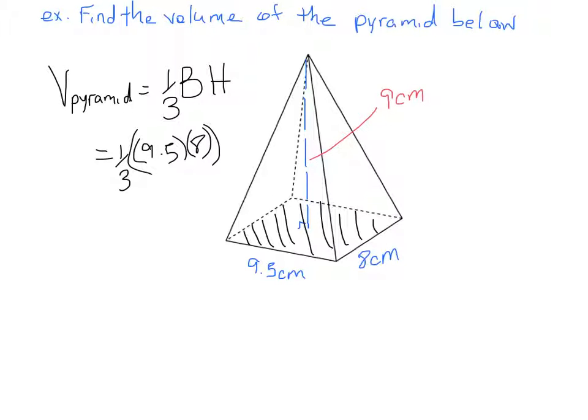And the height as we can see from our diagram is 9 centimeters. So times that 9 centimeters. And when we plug that all into the calculator we get that our volume here is 228 centimeters cubed.